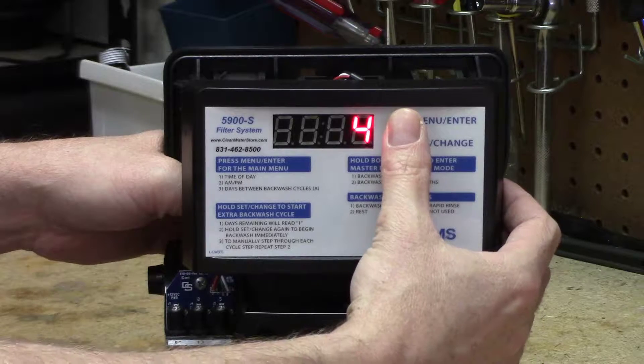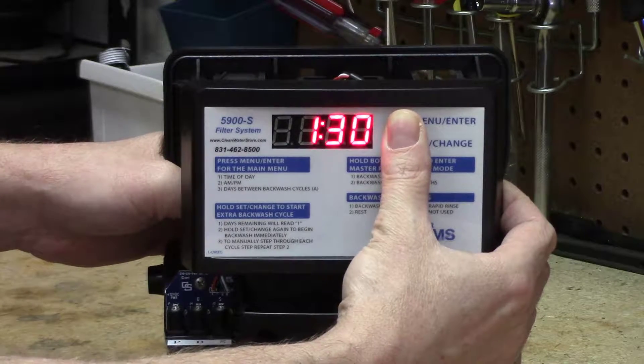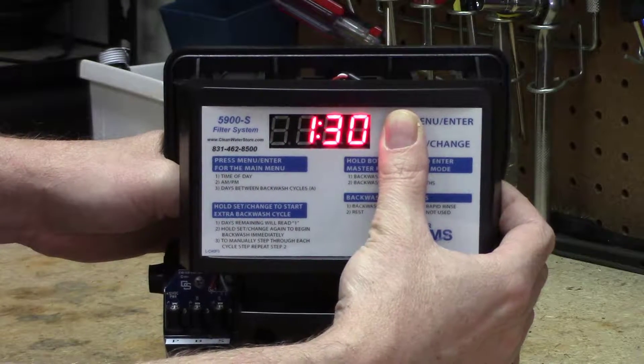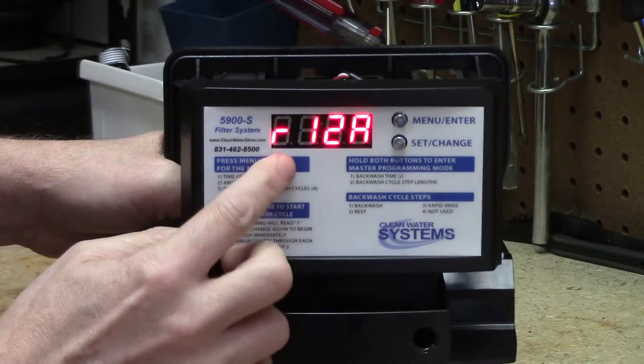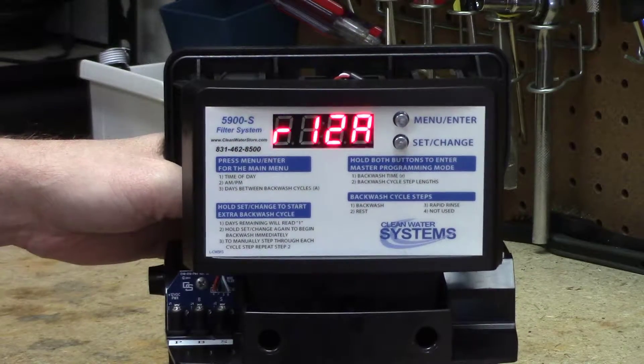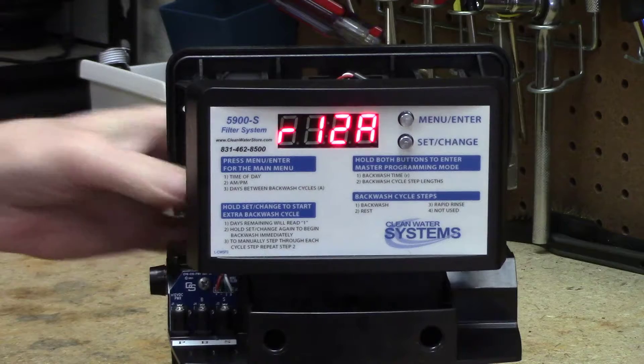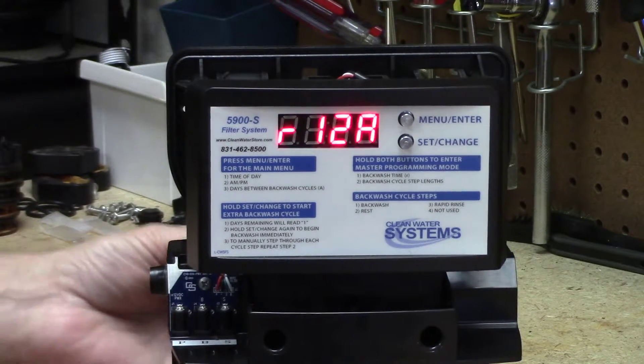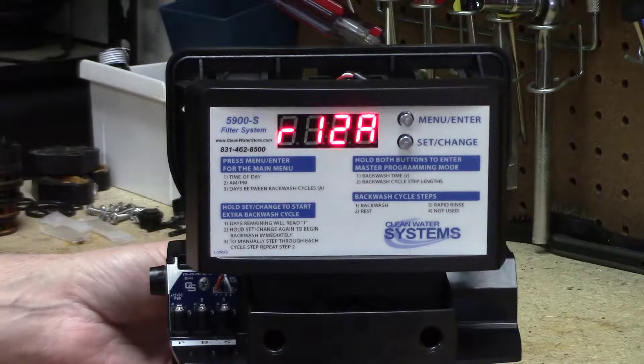To set the cycle steps, I'm going to press and hold both buttons. And after several seconds, it's going to go R12A. So what time do you want it to backwash at? Generally, you want it to backwash when nobody's using water and when no other filters are going off at the same time.